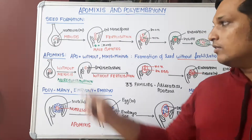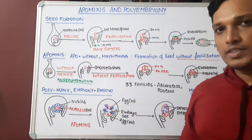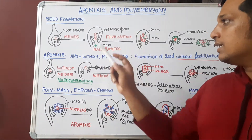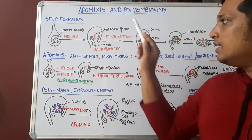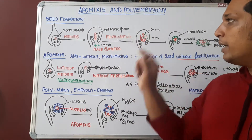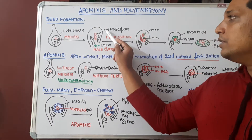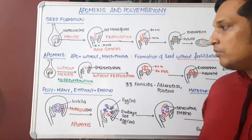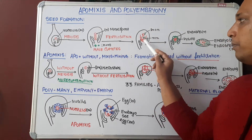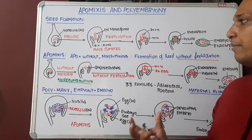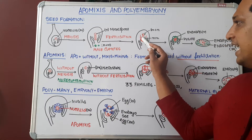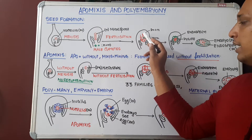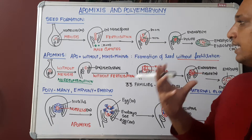The nucellus undergoes meiosis, which is a reductional division — a 2n cell becomes n. After meiosis, the nucellus forms four megaspores or a megaspore tetrad, which are all haploid. Out of four megaspores, three will degenerate and one will develop into a mature female gametophyte or embryo sac, containing an egg cell, polar nuclei, and a central cell.